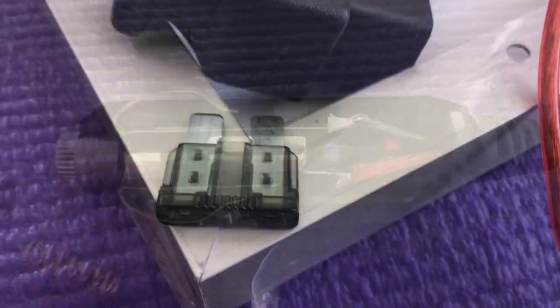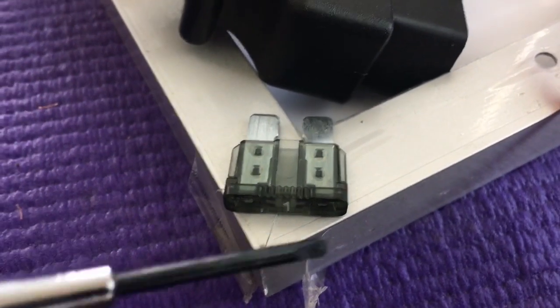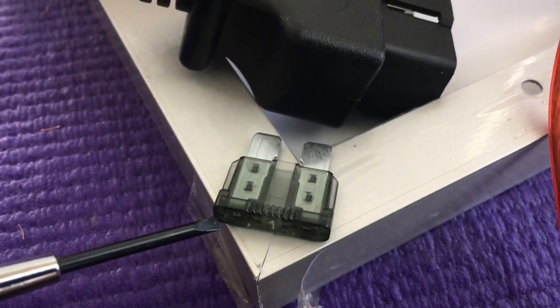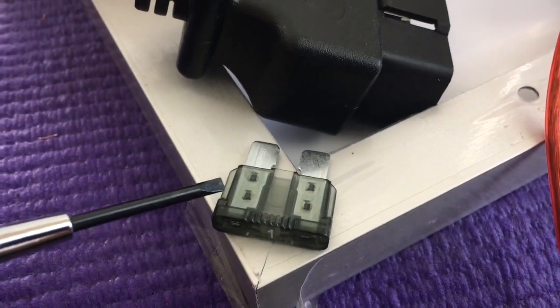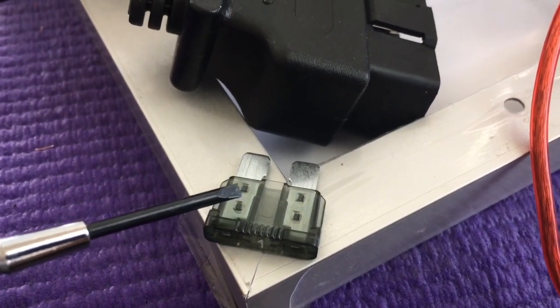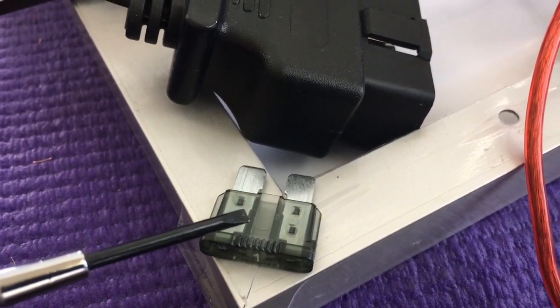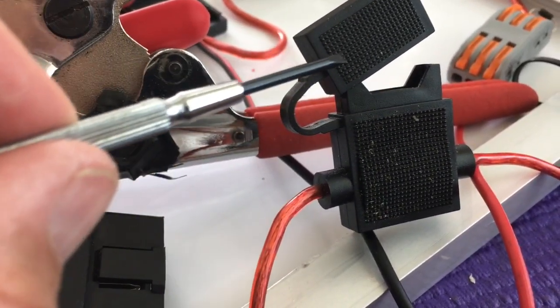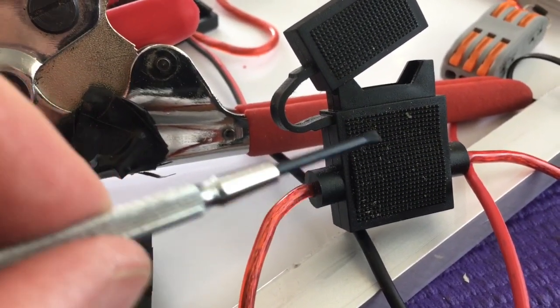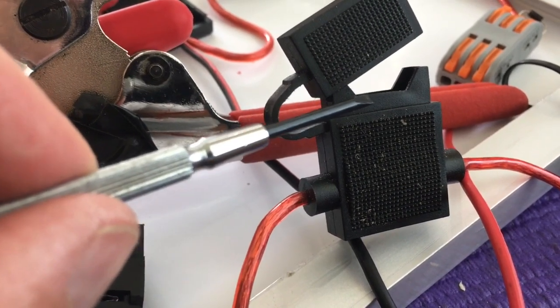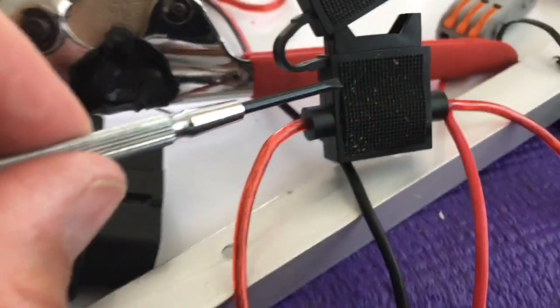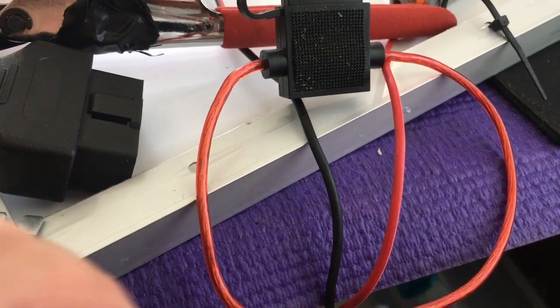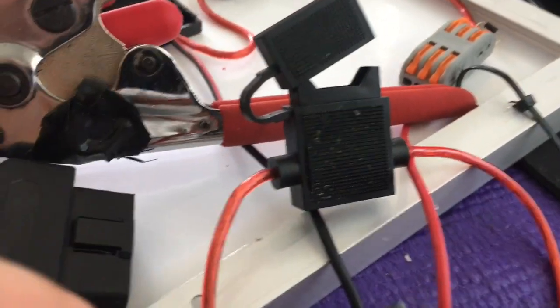So we're going to talk about fusing now. These are blade fuses. I'm a big fan of these, they're cheap and they work pretty well. And this is a waterproof, I would call it water resistant blade fuse holder.